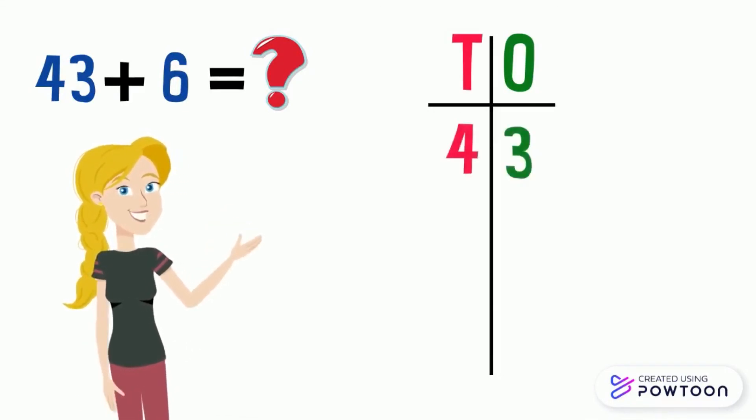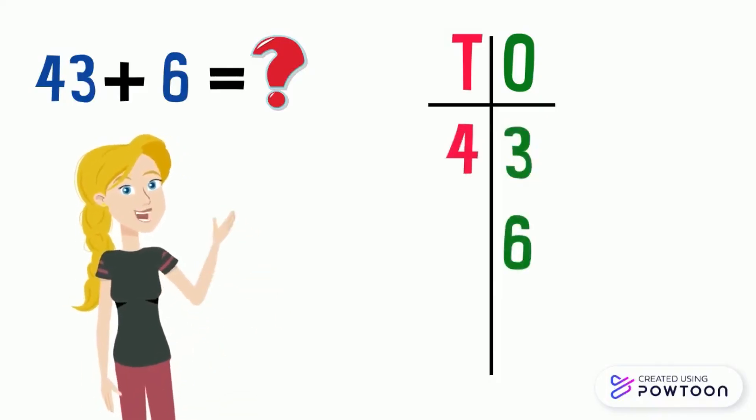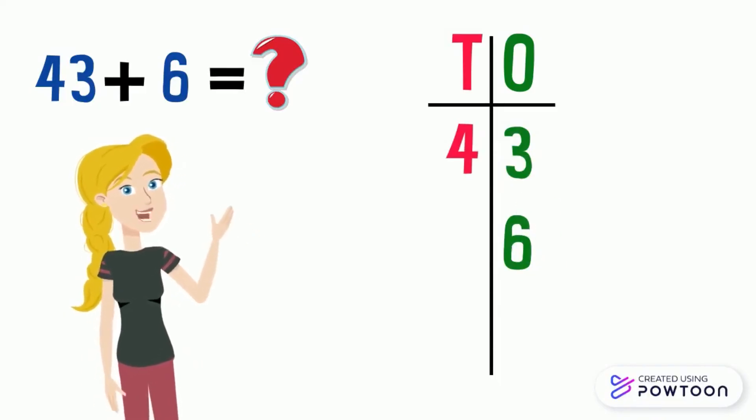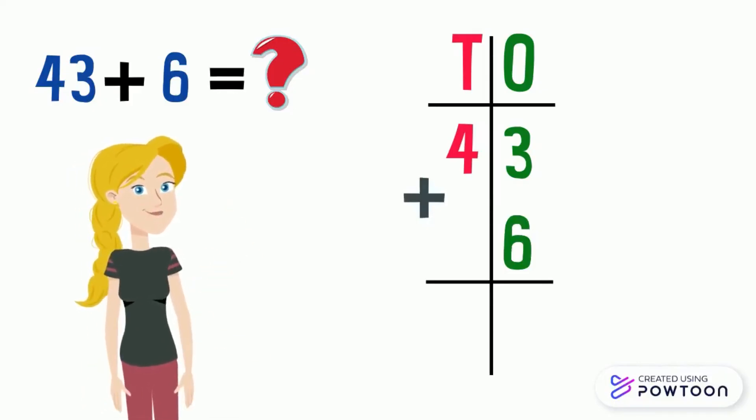Pay attention. We should put the ones below the ones and the tens below the tens. So, 6 is the ones digit. So, we put it in the ones place column. And, of course, we put the plus sign on the left. This bar represents the sum of these two numbers.